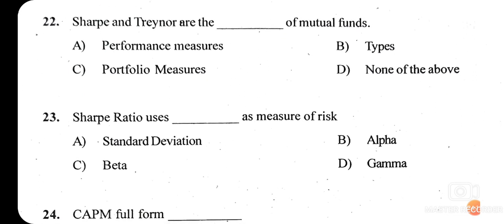Question twenty-three: the Sharpe ratio uses dash as a measure of risk — standard deviation, alpha, beta, or gamma? The right option is option A — standard deviation. The Sharpe ratio uses standard deviation as a measure of risk. Sharpe ratio and Treynor ratio are related to mutual funds and are used to measure risk.